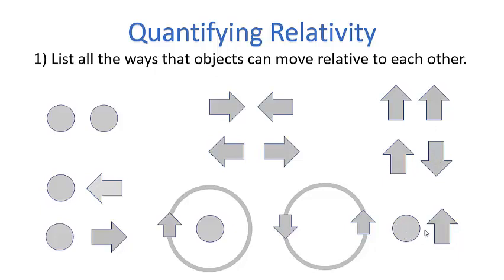We also have an object not moving and another moving transversely past it, plus two additional cases: one object not in motion with another in circular motion around it, and two objects in circular motion around a common point. These are the most obvious cases we might run into daily. We're going to deal with some of these today — not all — just to keep the video at a reasonable length.